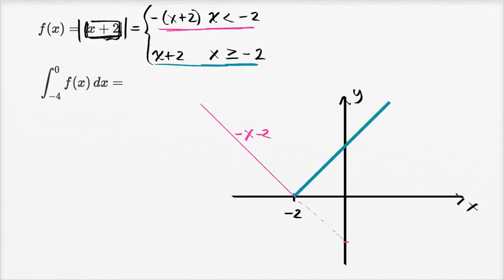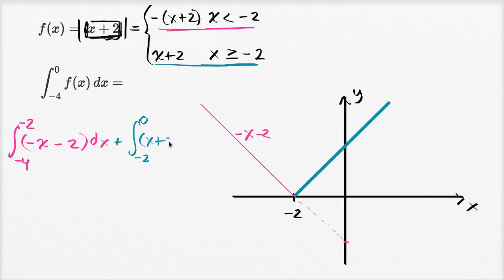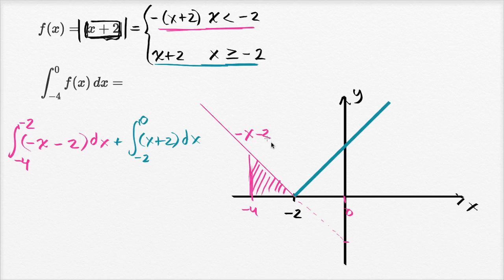Once we break up the function, we can break up the integral. This equals the integral from negative four to negative two of negative x minus two dx — I distributed the negative sign there — plus the definite integral from negative two to zero of x plus two dx. The first integral gives us the area under the curve negative x minus two and above the x-axis from negative four to negative two, and the second integral gives us the area between x plus two and the x-axis from negative two to zero.